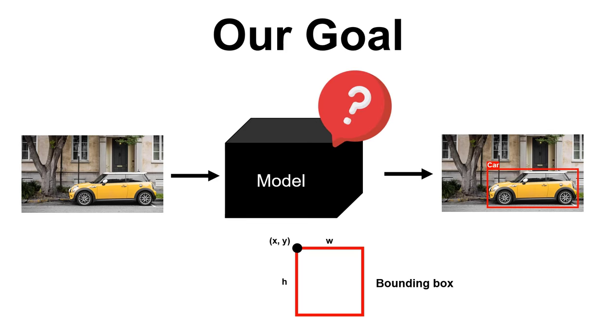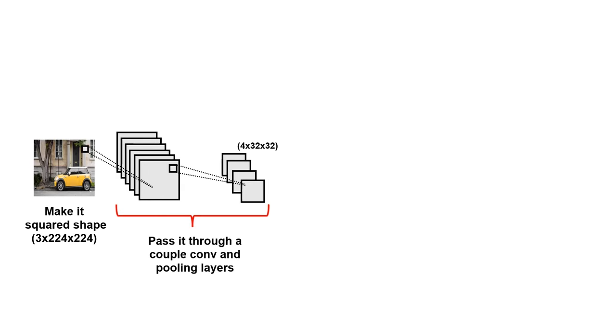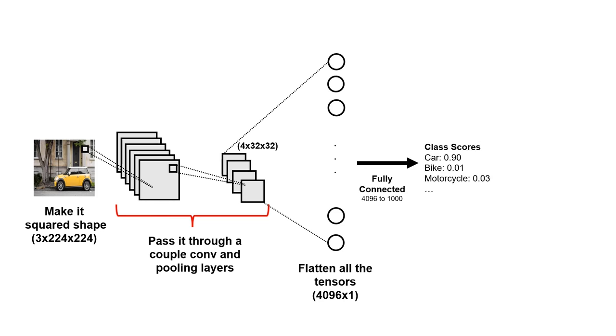So now our goal is clear. But how can we design such a model? Let's start by designing something as simple as possible. We receive an input image, then we reshape its size to be squared, since normally any CNN we might use receive a squared image as input. Then we can pass it through a couple convolution and pooling layers to capture all the necessary features.